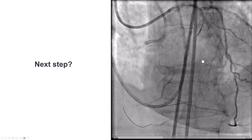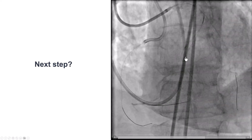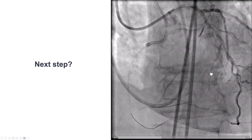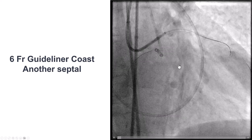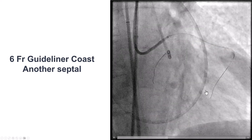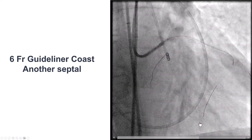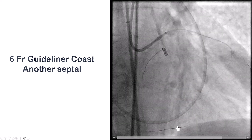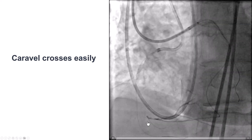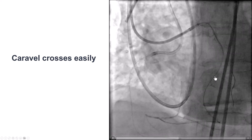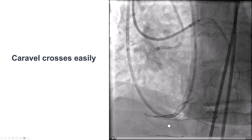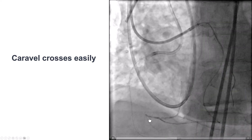One option would have been to take a small 1.0 to 1.5 mm balloon and perform dilation. But since there was another bigger septal further distal, we decided to go for that one and switched to crossing through the second septal. This is again a Sion black guide wire, and fairly easily the wire successfully crossed through that branch. We confirmed this was the true vessel. After delivering the Caravel — no problem this time — we are through this secondary PDA and injecting into the distal RCA, which is of small caliber.